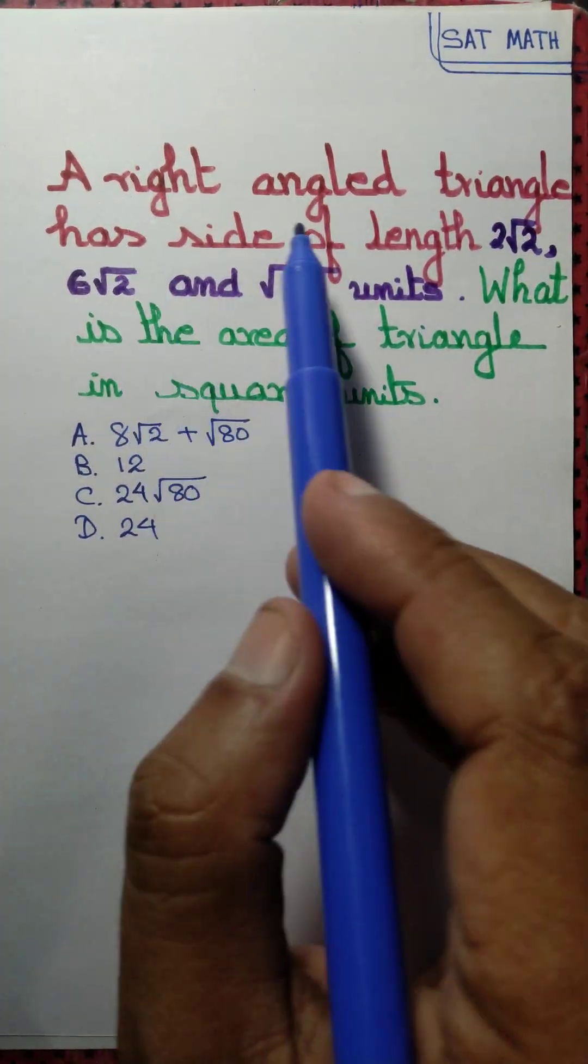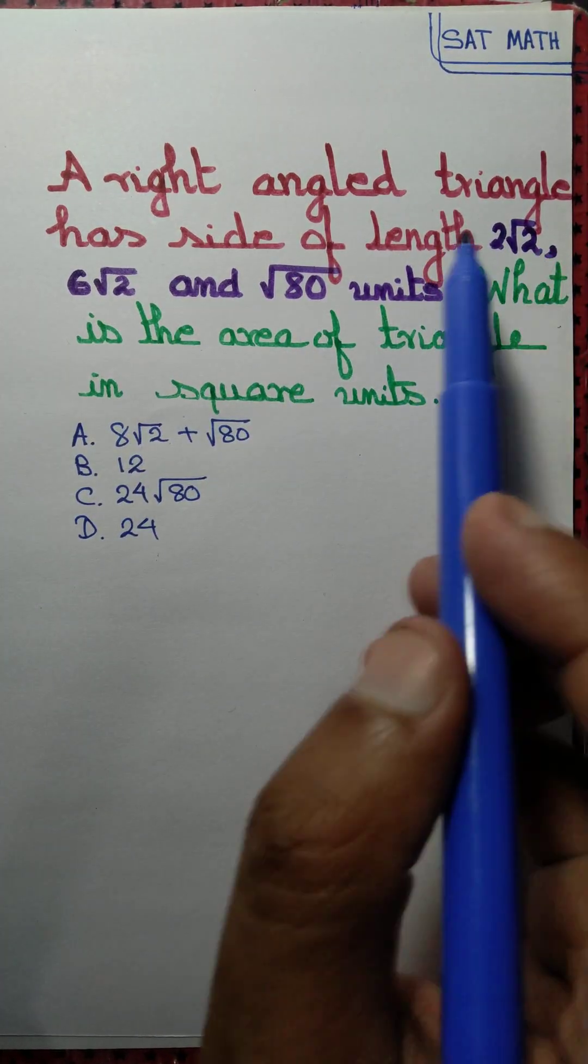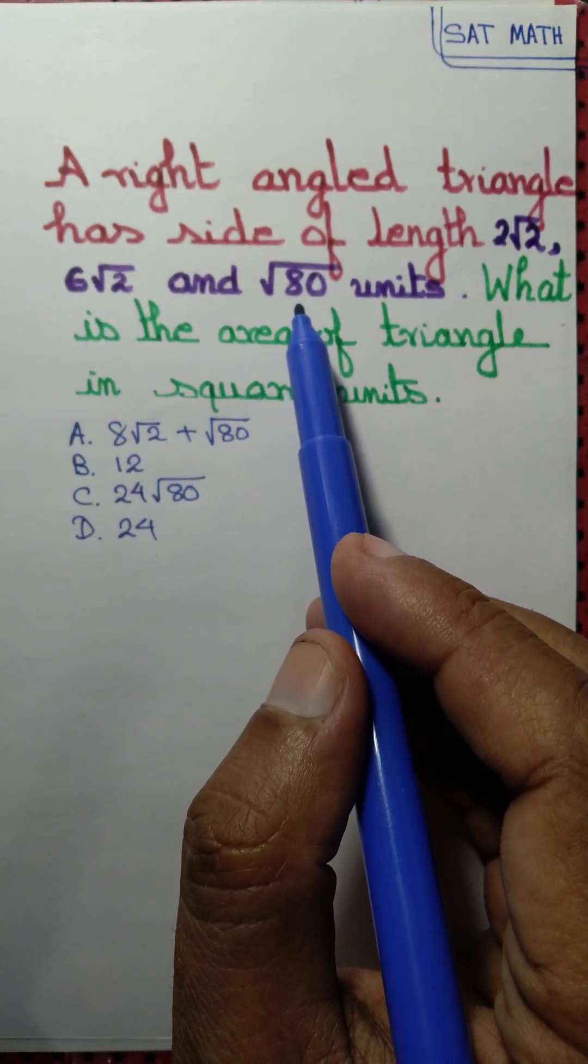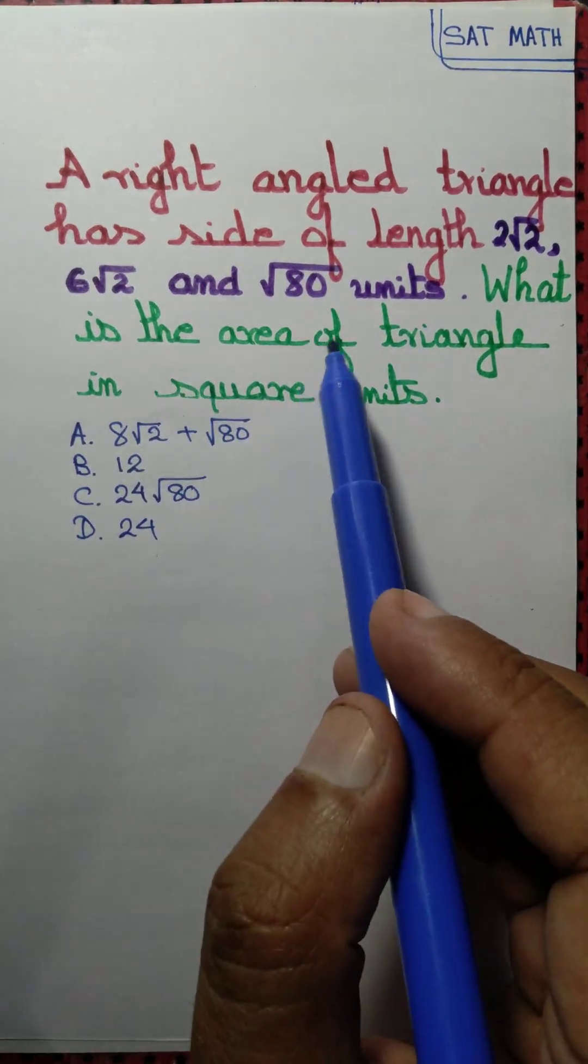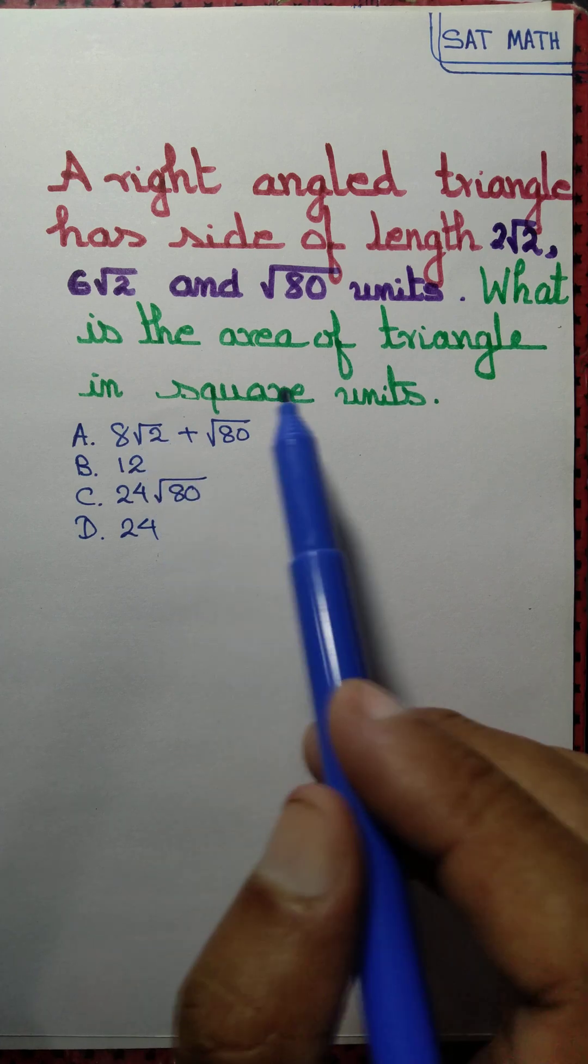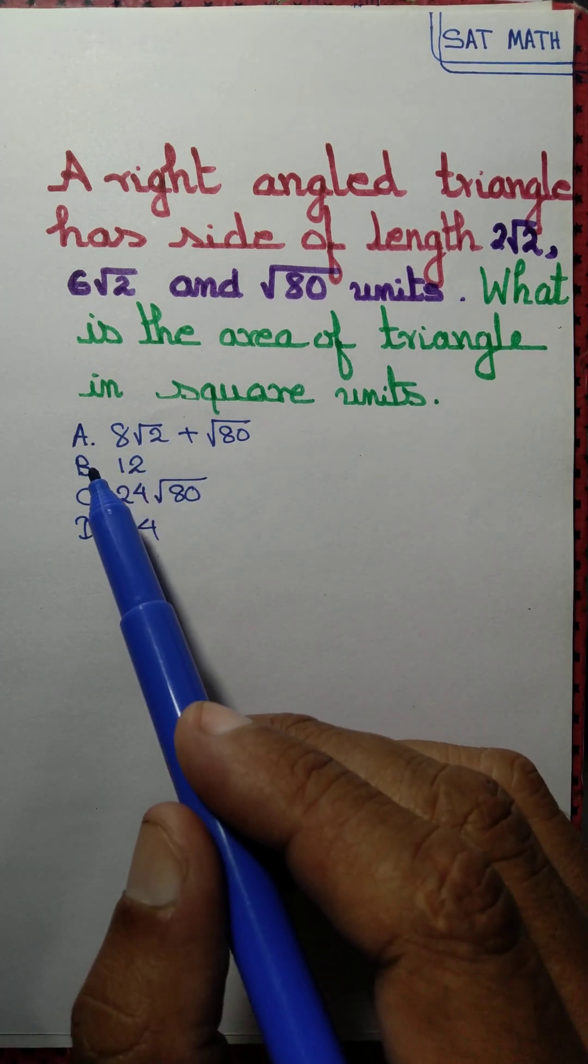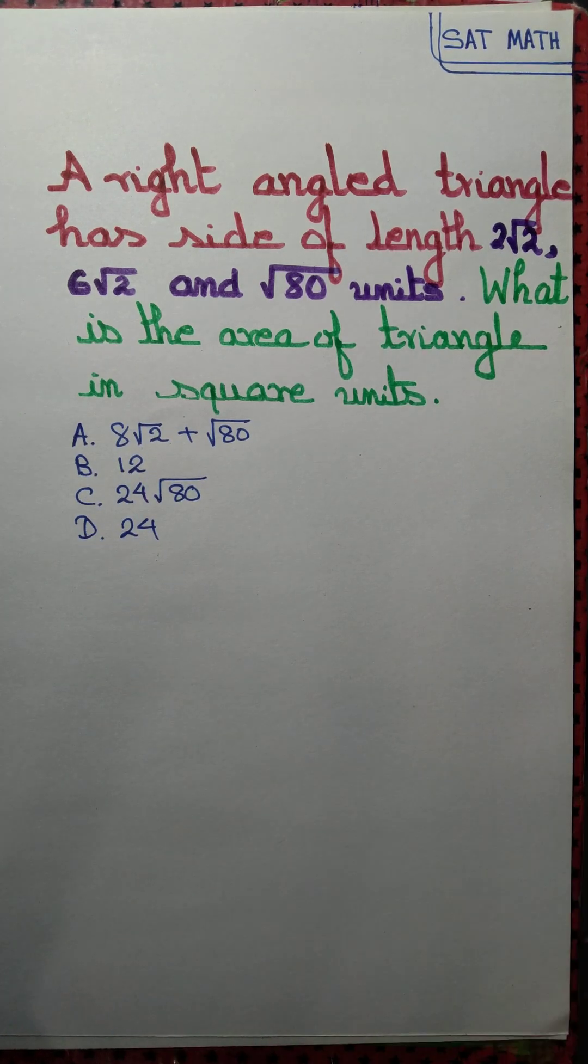A right-angled triangle has sides of length 2√2 units, 6√2 units, and √80 units. What is the area of the triangle in square units? Is it option A, option B, option C, or option D?